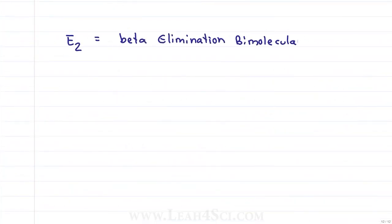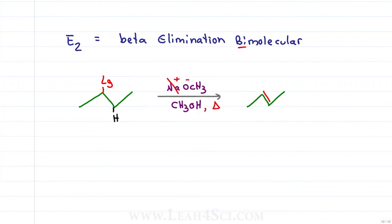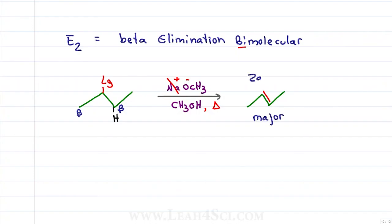E2 stands for beta elimination bimolecular — once again we remove the leaving group and a beta hydrogen to give us a pi bond, but this time it's bimolecular, meaning both molecules react at the same time for a fast reaction. E2 reactions require a strong base — in this case CH3O⁻ dissolved in its conjugate solvent CH3OH, a polar protic solvent. Once again there is no carbocation intermediate. Heat is often added to stabilize the formation of a pi bond, favoring E2 over SN2. Eliminating the more substituted beta hydrogen gives us the major product following Zaitsev's rule.